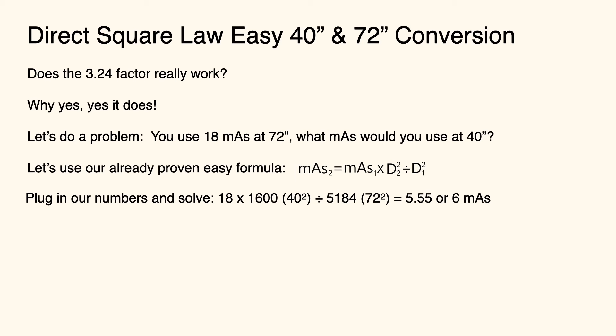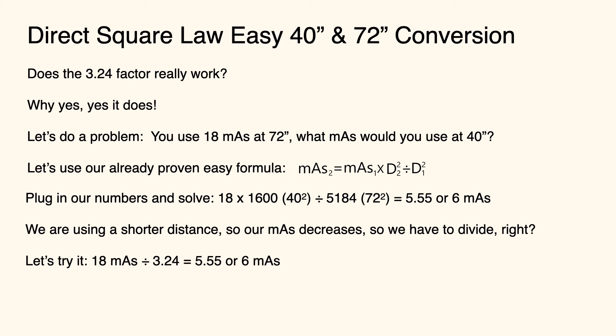We have a shorter distance, so we decrease our mAs, so we have to divide. We take our original mAs of 18, divide by 3.24 and we come up with 5.55 or 6 mAs. Exact same number, simpler process.